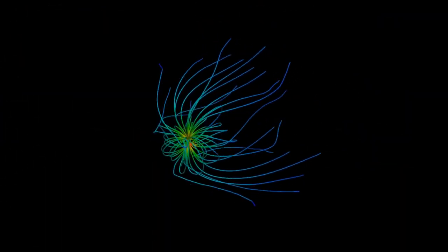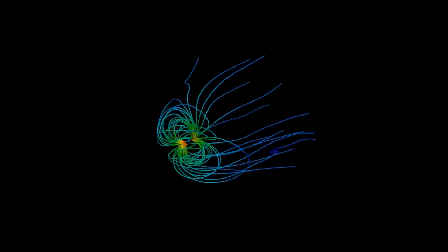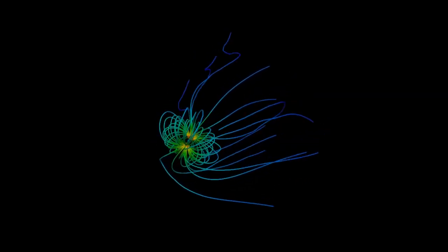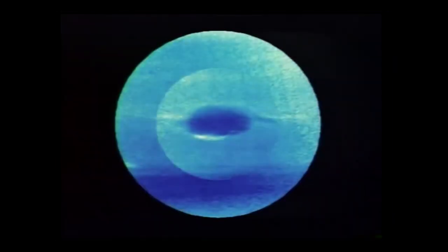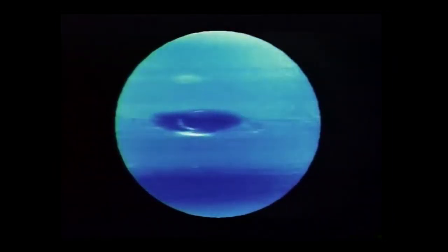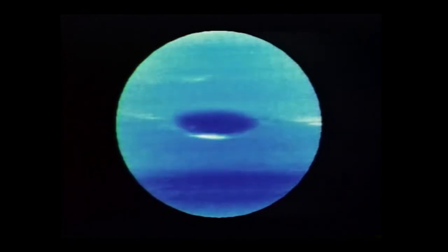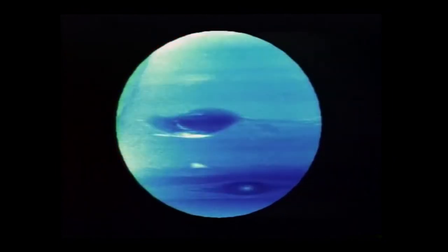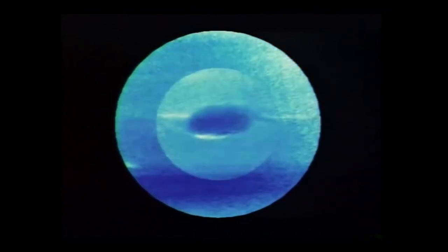The magnetic field of Neptune is about 27 times more powerful than that of Earth. Neptune has a storm similar to the Great Red Spot on Jupiter. It is commonly known as the Great Dark Spot and is roughly the size of Earth.